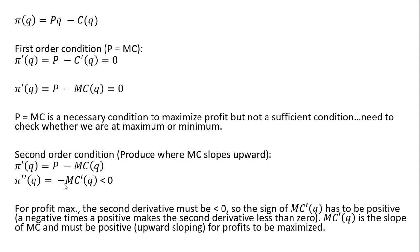A negative times a positive will be negative, or less than zero. So the derivative of marginal cost — MC prime — is just the slope of marginal cost, and it must be positive, or upward sloping, for profits to be maximized. I hope you found this video helpful.